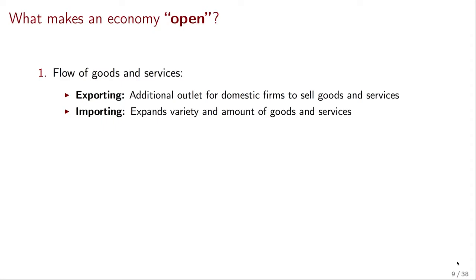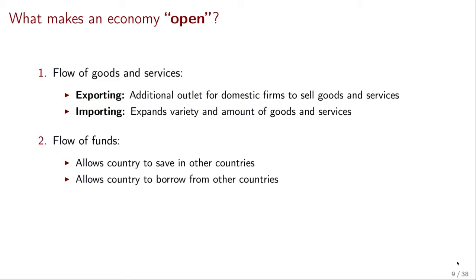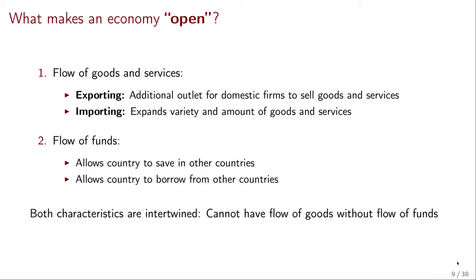This flow of goods and services has a counterpart: the flow of funds across countries. When we talk about this flow of funds, we're thinking about the possibility of a country to save in other countries. This includes purchasing assets, owning firms, or lending to agents or other countries. The converse is that the country can also borrow from other countries. Taken together, these two characteristics make an economy open, and they are always linked — you cannot have flow of goods without also having flow of funds.